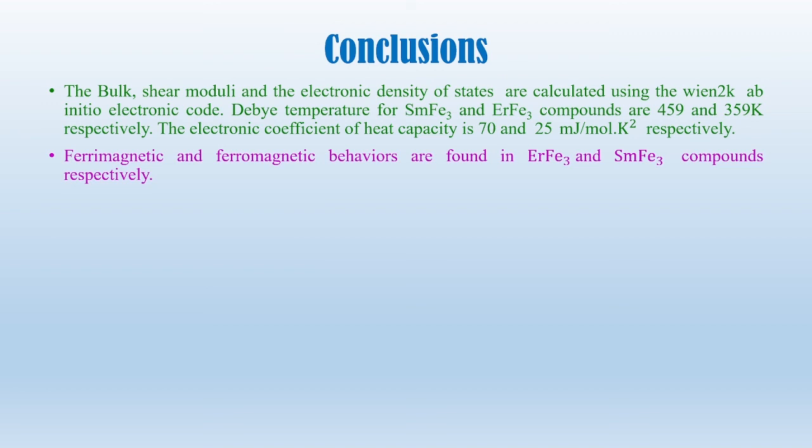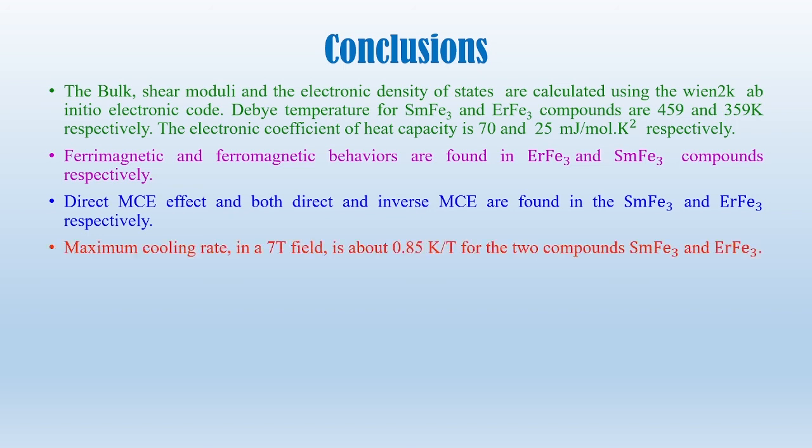Ferrimagnetic and ferromagnetic behaviors are found in erbium IR3 and samarium IR3 compounds respectively. Direct magnetocaloric effect and both direct and inverse magnetocaloric effect are found in samarium IR3 and erbium IR3 respectively. Maximum cooling rate in a 7 Tesla field is about 0.85 Kelvin per Tesla for the two compounds, samarium IR3 and erbium IR3.